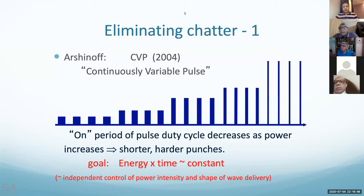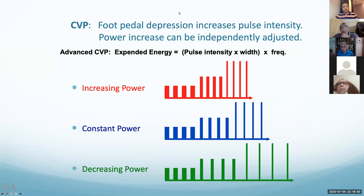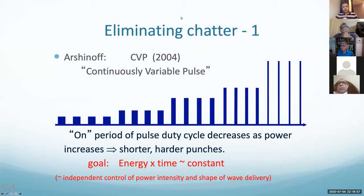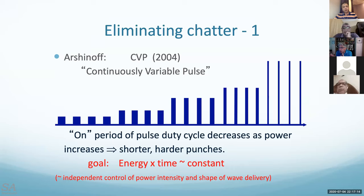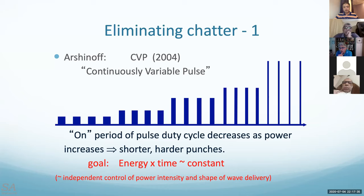When training a beginner in phacoemulsification, the approach is: go very close to the fragment, then start pressing the foot pedal to step two, which gradually builds vacuum, then hear the sound of occlusion. Keep the infusion on with the flow rate at about 30 — relatively low all the time. Only engage the FACO when actually holding the piece. There's no point in FACOing water — it just burns things.